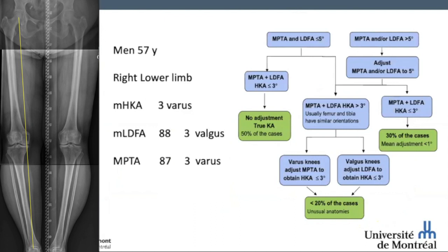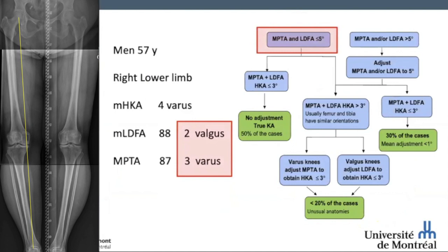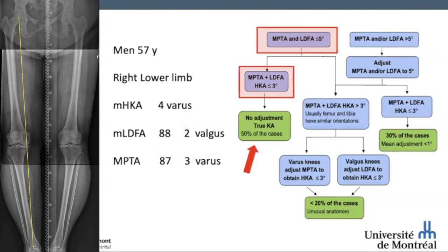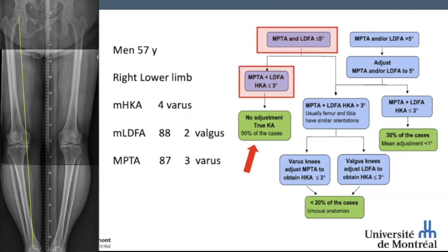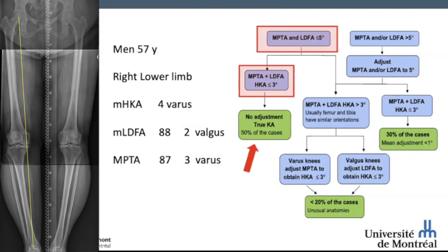Here's the first example. It's a man of 57 years old with a right varus knee. As you can see, his pre-op measurement on the long film is a 3 degree varus with a distal femur of 3 degree valgus and a proximal tibia of 3 degree varus. If we follow the algorithm, the MPTA and LDFA of this patient are below 5 degrees: 2 degree valgus for the femur and 3 degree varus for the tibia. The combination of the femur and the tibia produces a combined HKA of less than 3 degrees, so no adjustment needs to be performed during surgery. We are performing a true kinematic alignment procedure, and this happens in about 50% of cases.